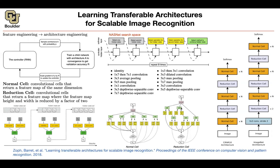Student: Things like batch normalization — are those baked into the layers you can choose from? Professor: After every convolution, there is going to be a batch normalization. You could choose to put it or not, but in this setup it's included automatically after each convolution.